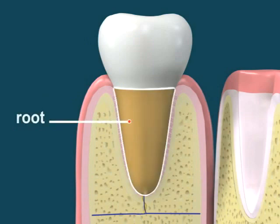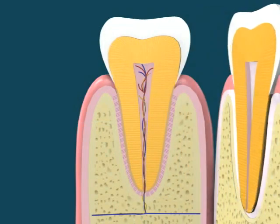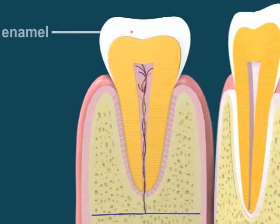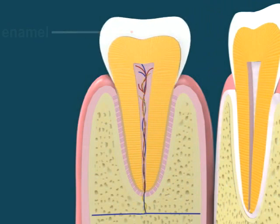Roots are part of the natural cavity within a tooth that consists of the dental pulp chamber. Enamel is very hard and quite resistant to mechanical and chemical attack.